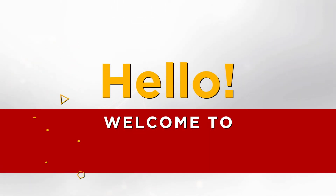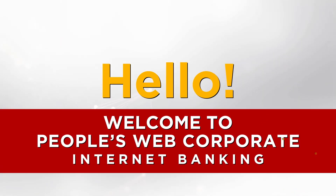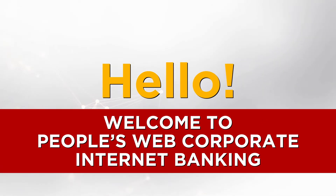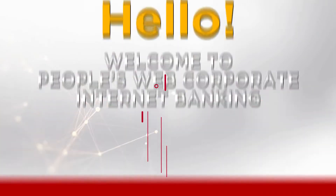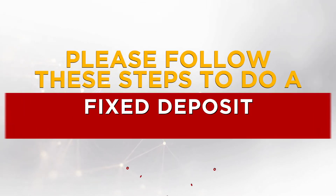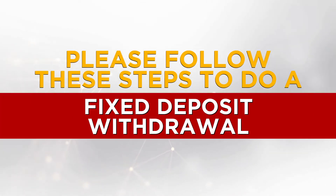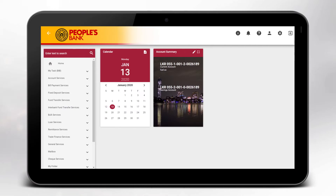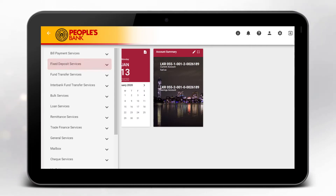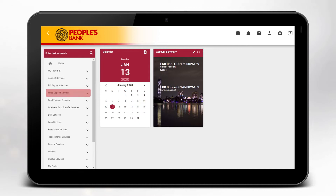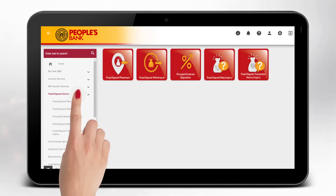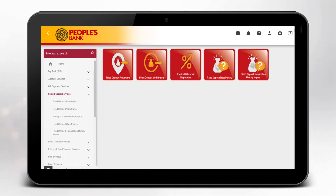Hello, welcome to People's Web Corporate Internet Banking. Please follow these steps to do a fixed deposit withdrawal. Once you have logged into your account, select Fixed Deposit Services from the list shown to your left, then select Fixed Deposit Withdrawal.